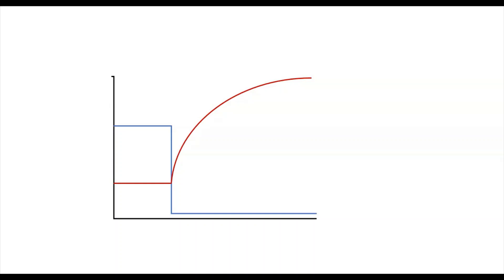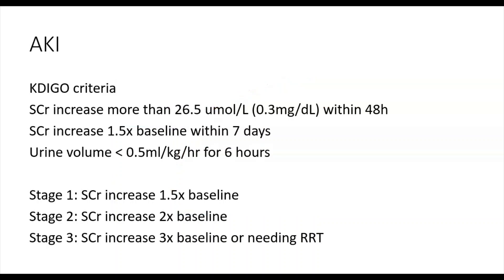So now that we've discussed some concepts regarding kidney function and acute kidney injury, we can go on to discuss the definition of acute kidney injury and the underlying etiologies. Acute kidney injury, or AKI, is currently defined by the KDIGO criteria, which stands for Kidney Disease Improving Global Outcomes, a leading global organization for kidney disease.